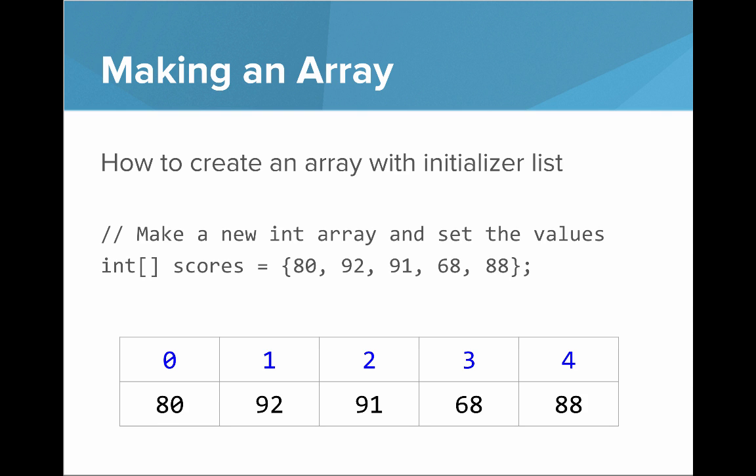So you can also make an array with an initializer list, which sets the initial values. So here we can say int array scores, and then in between curly brackets, we'll write the element values separated by commas.